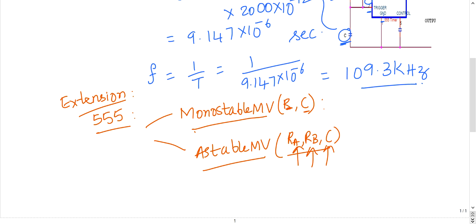So from monostable multivibrator, the time period of oscillation will be asked generally, which is given by T equal to 1.1 Rc. 1.1 Rc, so it is easy to memorize. And we have just seen the astable multivibrator time period of oscillation.